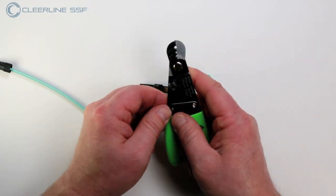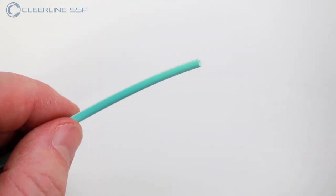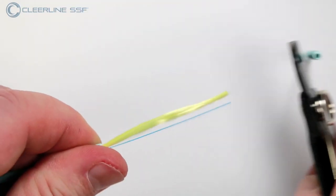Using the 2 mm opening on the strippers, remove approximately 50 mm or 2 inches of cable jacket.